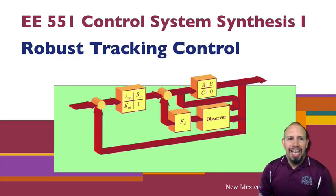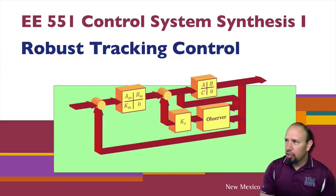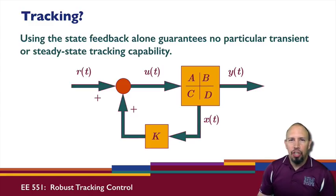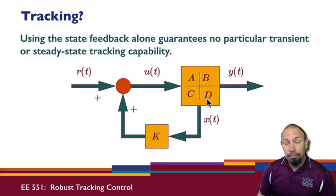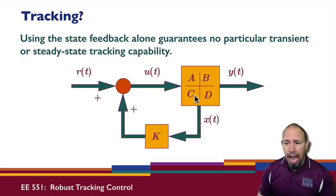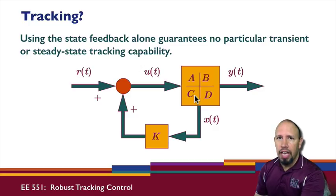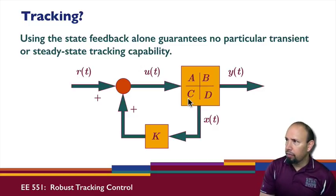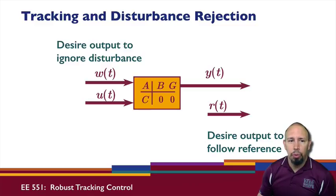We're looking now at robust tracking control. When we looked at control before, we were primarily concerned about either stabilizing the system or placing the eigenvalues wherever we want. That had nothing to do with actually tracking a specific signal. We didn't design for tracking, so in general we will not get good tracking, as we saw in the last practice problems.